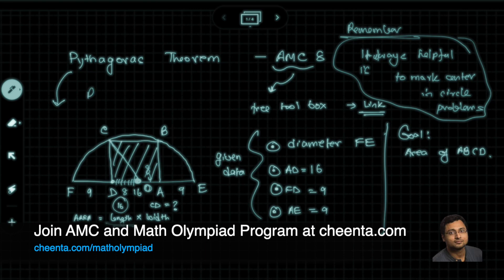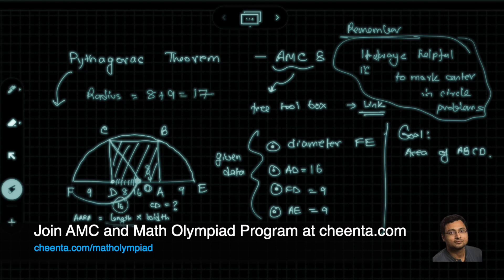So what is the radius of the circle? The radius is 8 plus 9, that is 17. So OF, this radius is 17. O is the center, F is the point on the circumference. So OF is the radius. You add 9 and 8, you get the value of it.